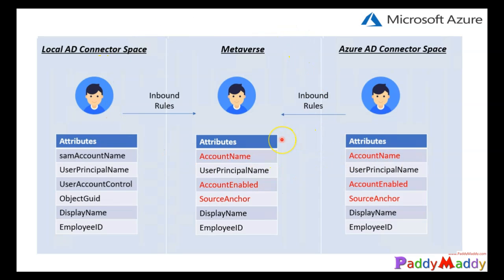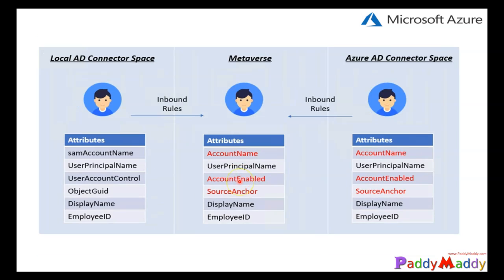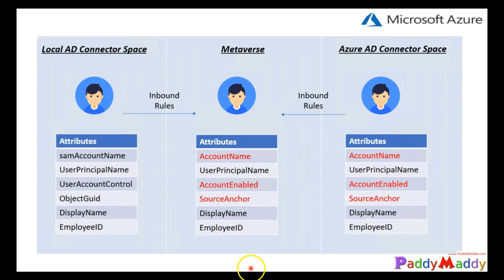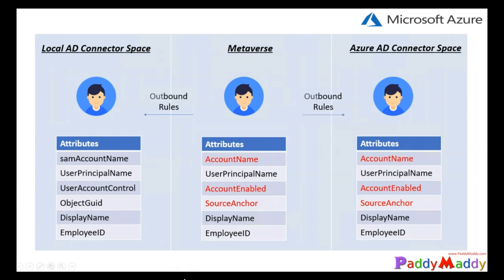This is all about the inbound. We also have to depend on outbound. The data was processed for syncing to metaverse. Similarly, AAD also pulls the data and puts it in one place. For the output, it would send the data for the output as well. The outbound is very similar - you have the changes. Account name gets changed back to Sam account name, account enabled gets changed to user account control, and source anchor gets changed to object GUID. That's how it goes.